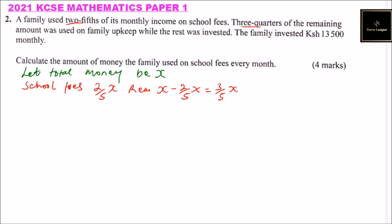Three quarters of the remaining amount was used for family upkeep. So it means three quarters, you multiply by 3 over 5 of X. You can use your calculator. We can simplify here. So we get 9 divided by 20 X. So that is what was used for family upkeep.